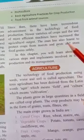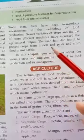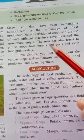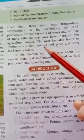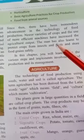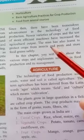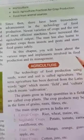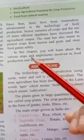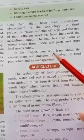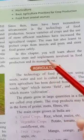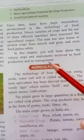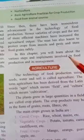Man also learned to protect crops from insects and pests and to store food grains safely. He has also learned about the various steps and implements involved in food production and its management, which is what this chapter is about.